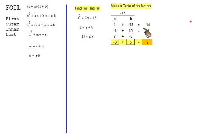Each row, when you find the sum, 1 plus negative 15 equals negative 14, that doesn't work. Negative 1 plus 15 equals positive 14, that doesn't work. You're looking for a 2, and here's the positive 2. It's the negative 3 plus 5. So this is a, and this is b. X squared plus 2x minus 15 factors into x minus 3 and x plus 5.